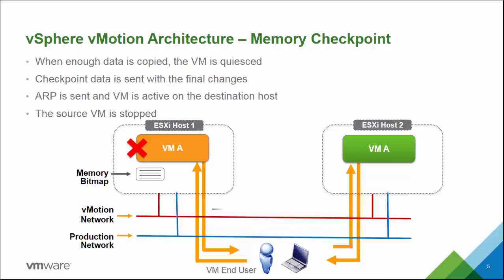vMotion allows us to achieve fantastic things when managing infrastructure. It's very beneficial for maintenance activities — if you need to move all VMs off a particular host to take it out and add more memory or disk capacity, vMotion is very helpful. For patching, we can move all VMs off a host using vMotion and patch that host while nothing is running on it, mitigating a lot of risk. vMotion, introduced way back in 2003, has been a cornerstone of availability management and is the foundation for many additional services.